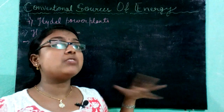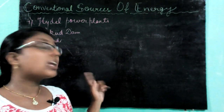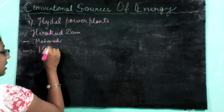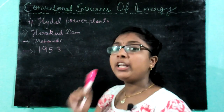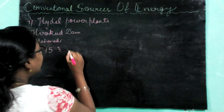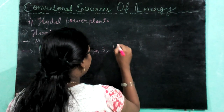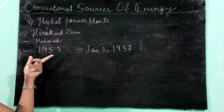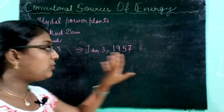The construction of the Hirakud Dam was completed in 1953, and it was formally inaugurated by the first Prime Minister of India, Jawaharlal Nehru, on 3rd January 1957.